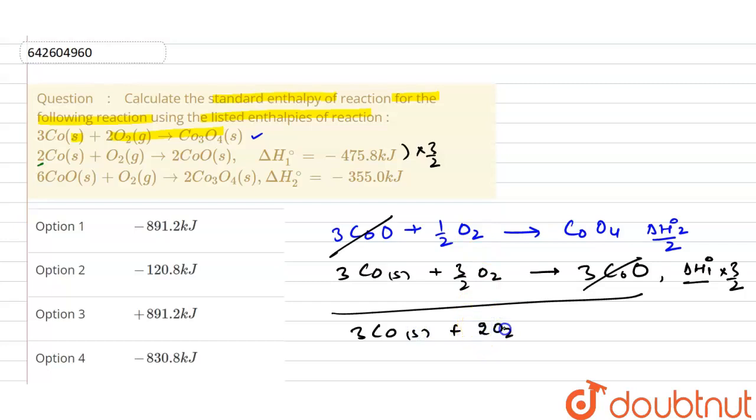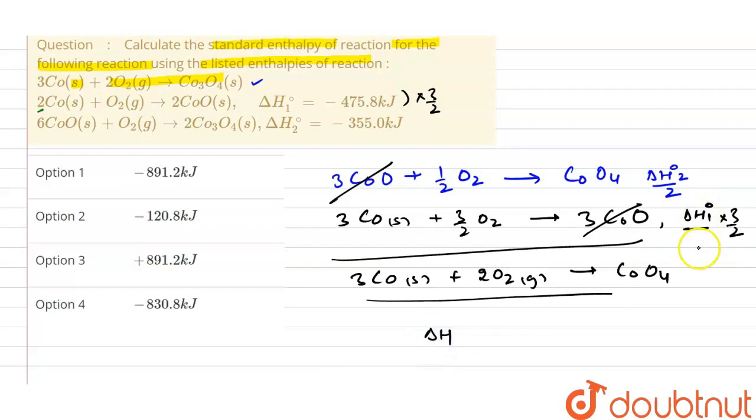and three times of cobalt solid plus if you add these two, this will be two moles of oxygen, and that will convert into Co₃O₄. So for this reaction, what will be the enthalpy?